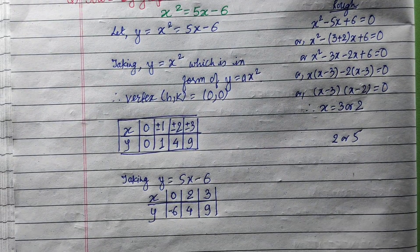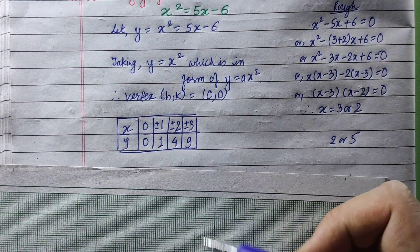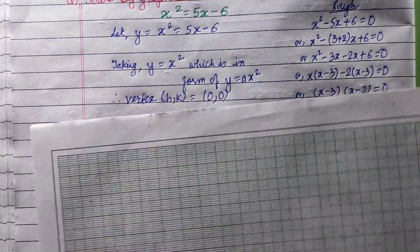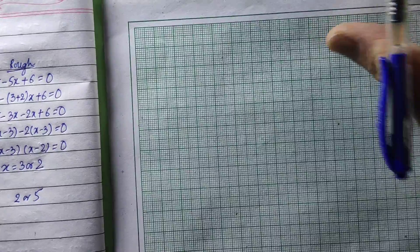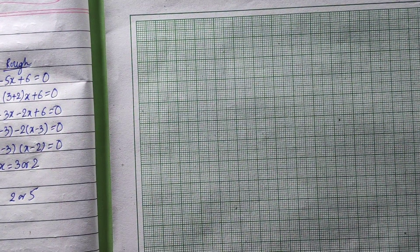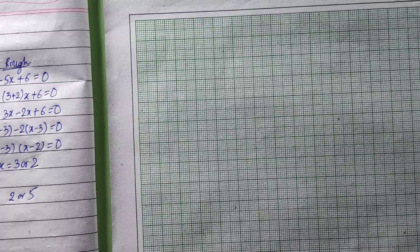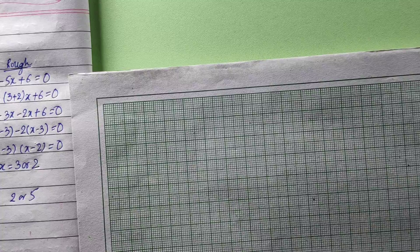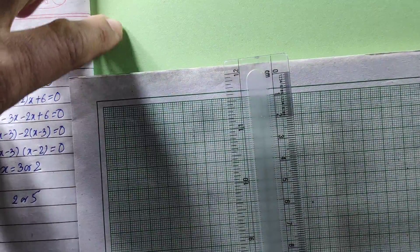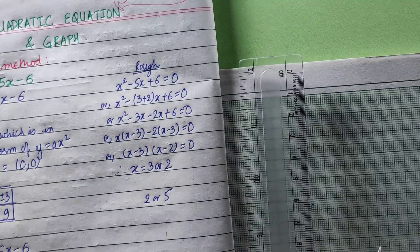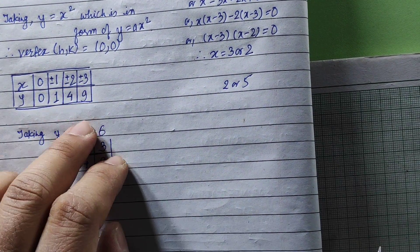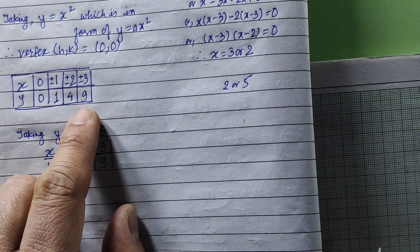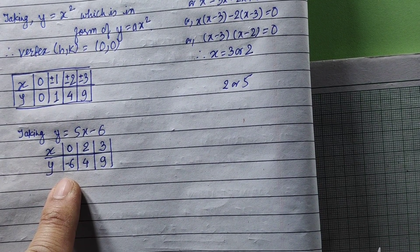Let's do the graph. We need to plot the graph and scale with a pencil. Now we have maximum points. Here x is 3, y is 9, and negative 6. We go to the graph.